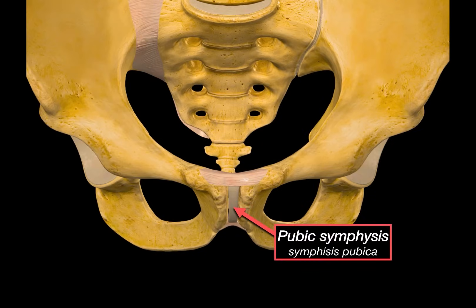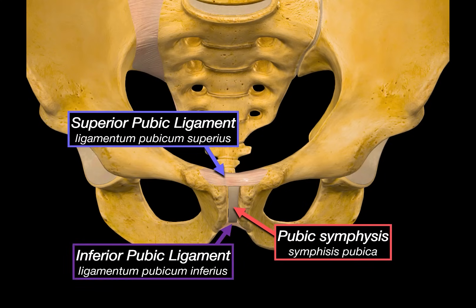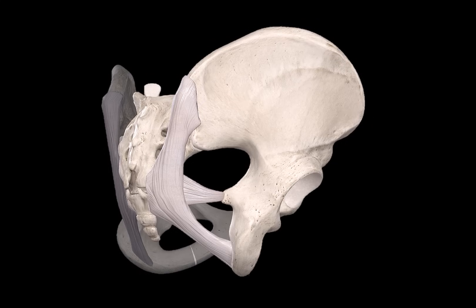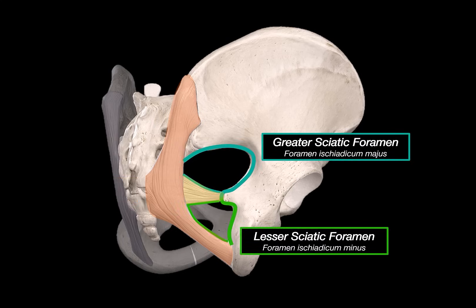The next articulation is the pubic symphysis — a cartilaginous joint that unites the two pubic bones at the midline. It is supported by the superior pubic ligament running across the top and the inferior pubic ligament at the bottom. These ligaments work together to provide stability during movement like walking and changes in posture. Other important ligaments in this region include the sacrotuberous ligament and the sacrospinous ligament, which span between the sacrum and the ischium and help convert the greater and lesser sciatic notches into the greater and lesser sciatic foramina, forming passageways for structures entering and leaving the pelvis.